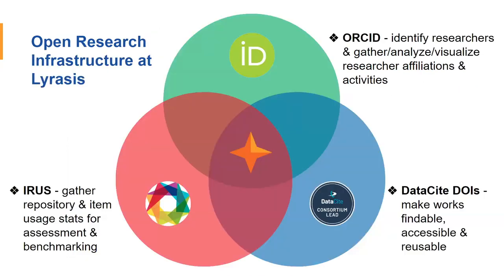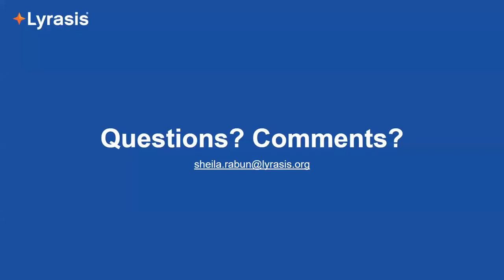To wrap up: we've got ORCID to identify researchers and gather and analyze research activity; DataSite DOIs to help make works more FAIR; and IRIS to get a better understanding of usage for assessment and benchmarking. If you have any questions or comments, feel free to email me — I would love to hear from you. It's Sheila.Raven at Lyrasis.org. Thank you.